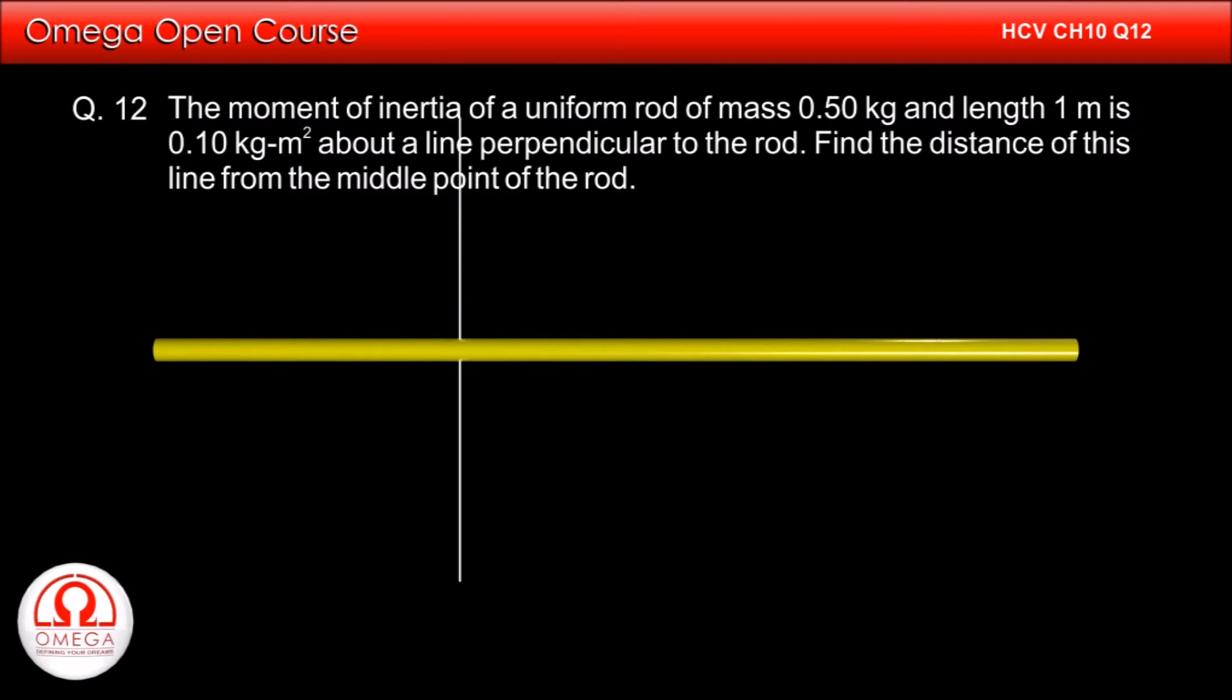The moment of inertia of a uniform rod of mass 0.5 kg and length 1 m is 0.1 kg·m² about a line perpendicular to the rod. Find the distance of this line from the middle point of the rod.